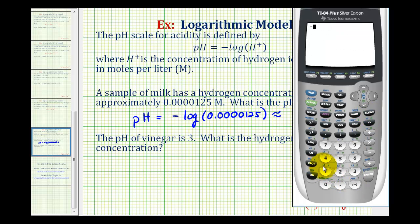We'll type in negative common log and then the hydrogen ion concentration. So the pH would be approximately 4.9.